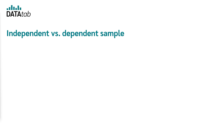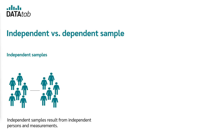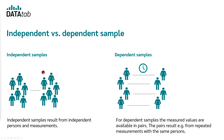What is the difference between an independent and a dependent sample? Independent samples are made up of independent people and measurements — a person in one sample is not related to a person in the other sample. For dependent samples, the measured values are available in pairs, resulting from repeated measurements with the same persons — for example, before and after a surgery. With the independent sample t-test, we consider only the case of independent samples.